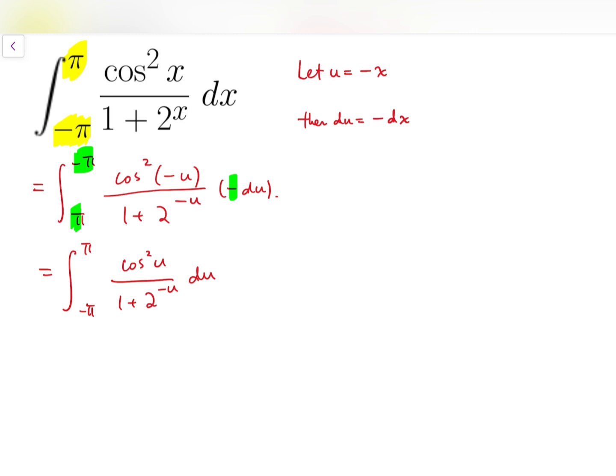And so the integral is actually almost the same, except that the index at the bottom, 2 to the power x, becomes 2 to the power minus u. Or if we even go back to the variable x using a dummy variable, then it's exactly the same, except that the power of 2 turns from x to minus x.